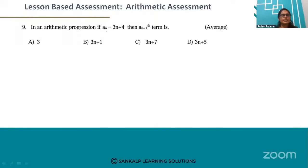Here the nth term is given by a_n = 3n + 4. You have to find the (n+1)th term. So for a_(n+1), we substitute: 3 times (n+1) plus 4.